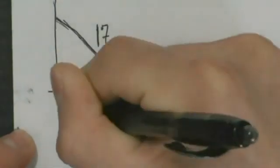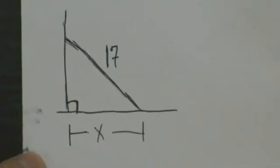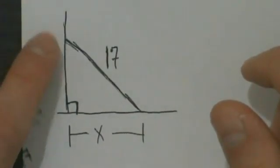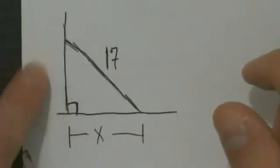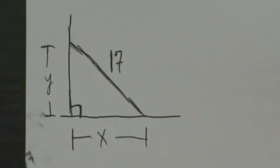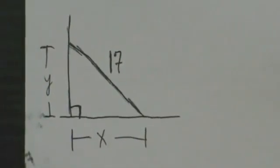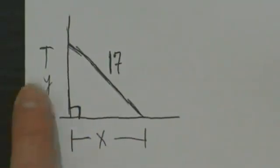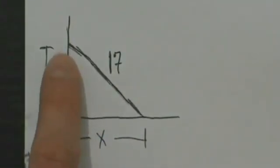Similarly, the height from the tip of the ladder down to the ground is going to be changing too, so we'll call that Y. So that's step one — we have our labeled picture: X is the distance from the base of the ladder to the wall, Y is the height from the ground to the top of the ladder, and the ladder is always 17 feet.